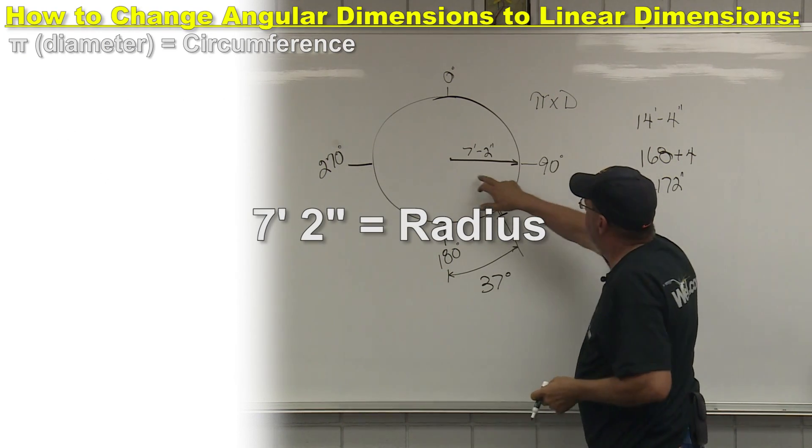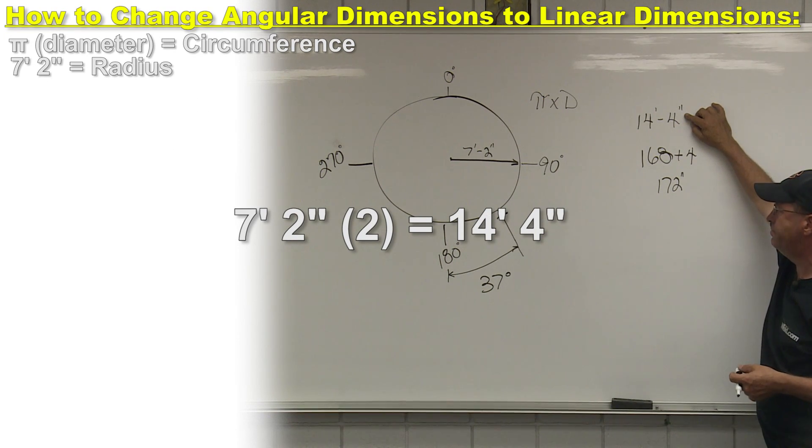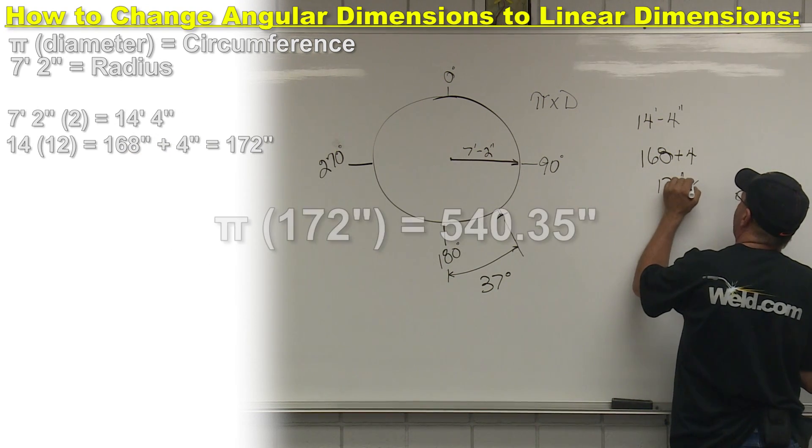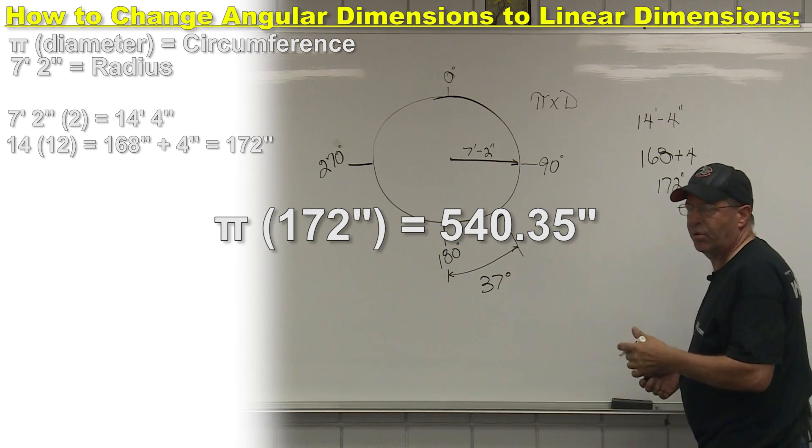So we take this, multiply it by two. We have 14 foot, four inches. I'm going to change that to whole inches. So 14 times 12, 168 plus the four, I have 172 inches, 172 inches times pi. Everybody knows what pi is, 3.1416.